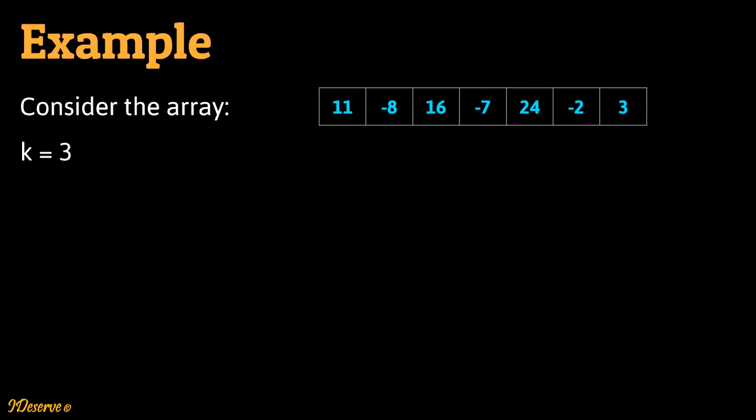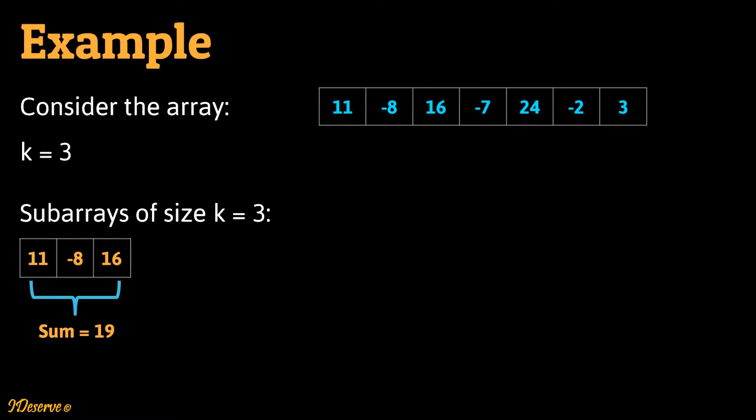Let's take one example to understand the problem. Consider the following array. Here k is equal to 3. The first subarray of size 3 starts from index 0 to 2. It has elements 11, -8, and 16, and hence the sum is 19.